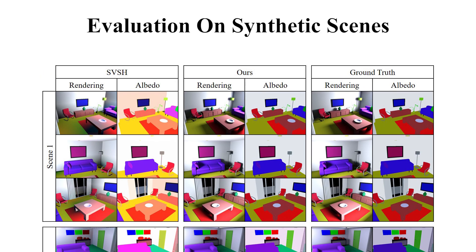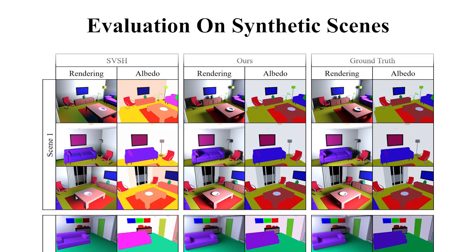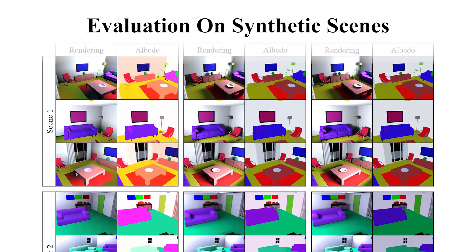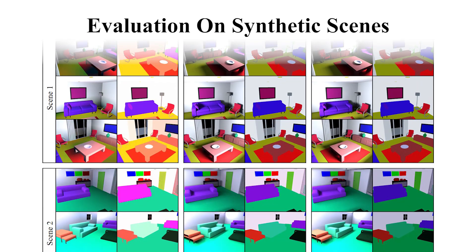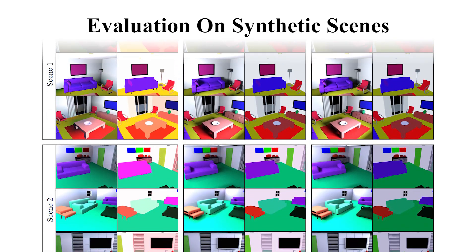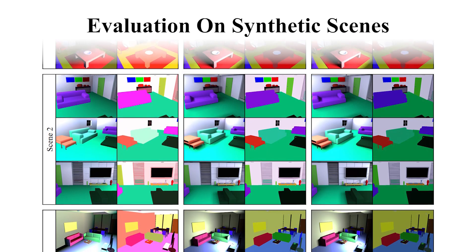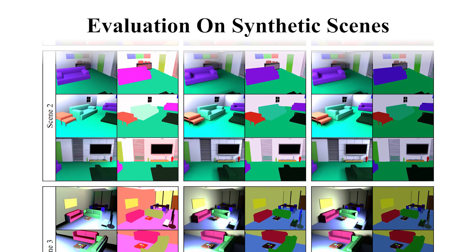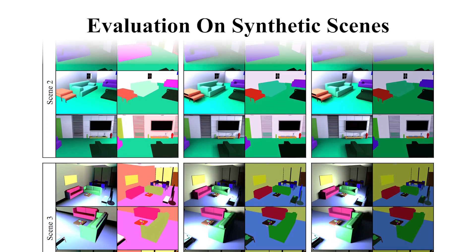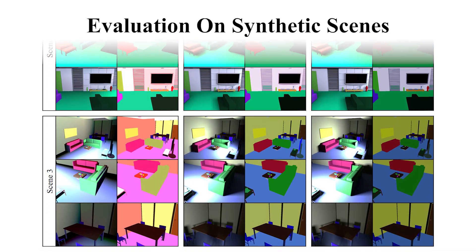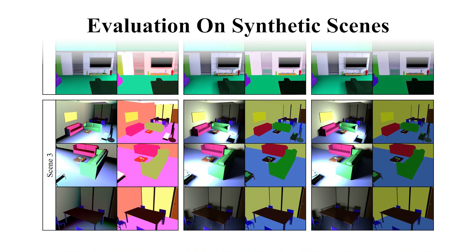We evaluate our method on multiple synthetic scenes. When jointly optimizing for both material and lighting, it is often difficult to distinguish between emitted and reflected light. However, our method estimates the material and emission parameters of every object with great accuracy, so that only the actual light source in the scene has a positive emission value.